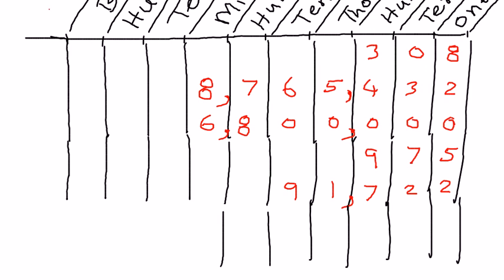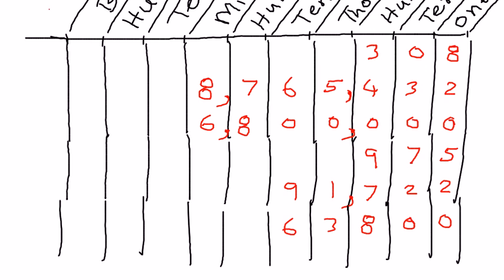Let's take one more example to strengthen our belief in this place value chart. The number I have is: zero, zero, eight, zero, zero, eight, three, six, nine. Zero is in the ones place, the second zero is in the tens place, eight is in the hundreds place, three is in the thousands place, six is in the ten thousands place, and nine is in the hundred thousands place. So therefore, the way we read this number is 963,800.